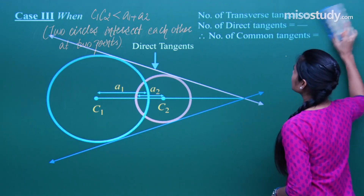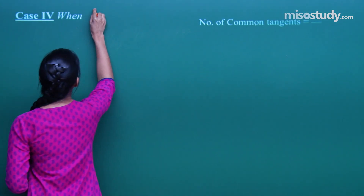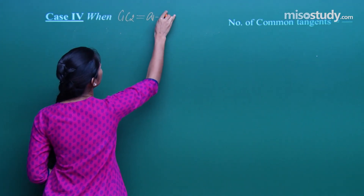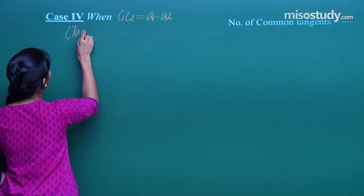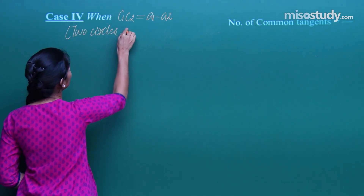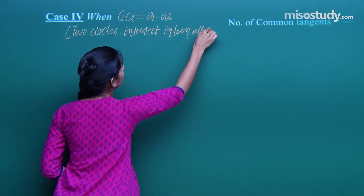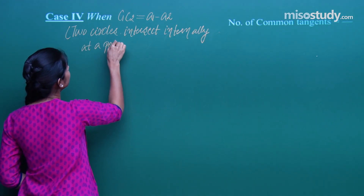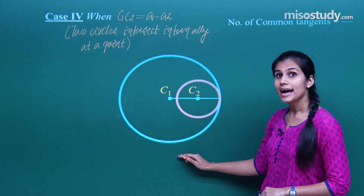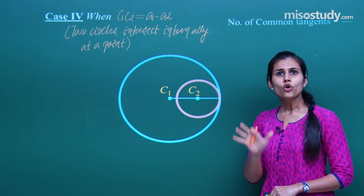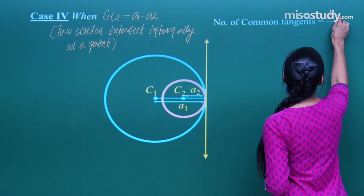There are other ways in which these circles can be positioned. Case 4: when the distance between the two circles is equal to the difference in the radii, the two circles intersect internally at a point. In this scenario, you land up with two coincident real tangents and two imaginary tangents, which creates just one distinct tangent. So the total number of common tangents is just one.